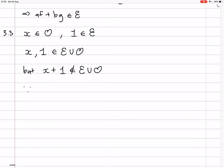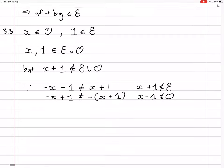Why? How do I know that? Because minus x plus 1 is not equal to x plus 1, and also minus x plus 1 is not equal to minus times x plus 1 either. So that proves that x plus 1 is... The first one proves that it's not even and the second thing proves that it's not odd. So it's not in either of those things. So it's not in the union. So this thing is not a subspace.